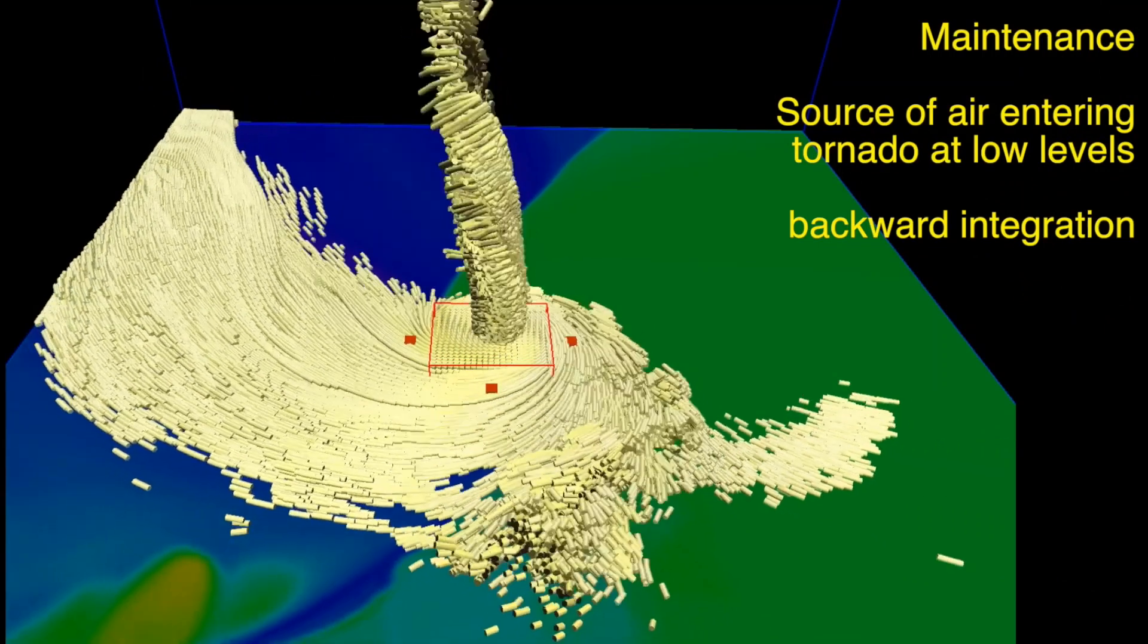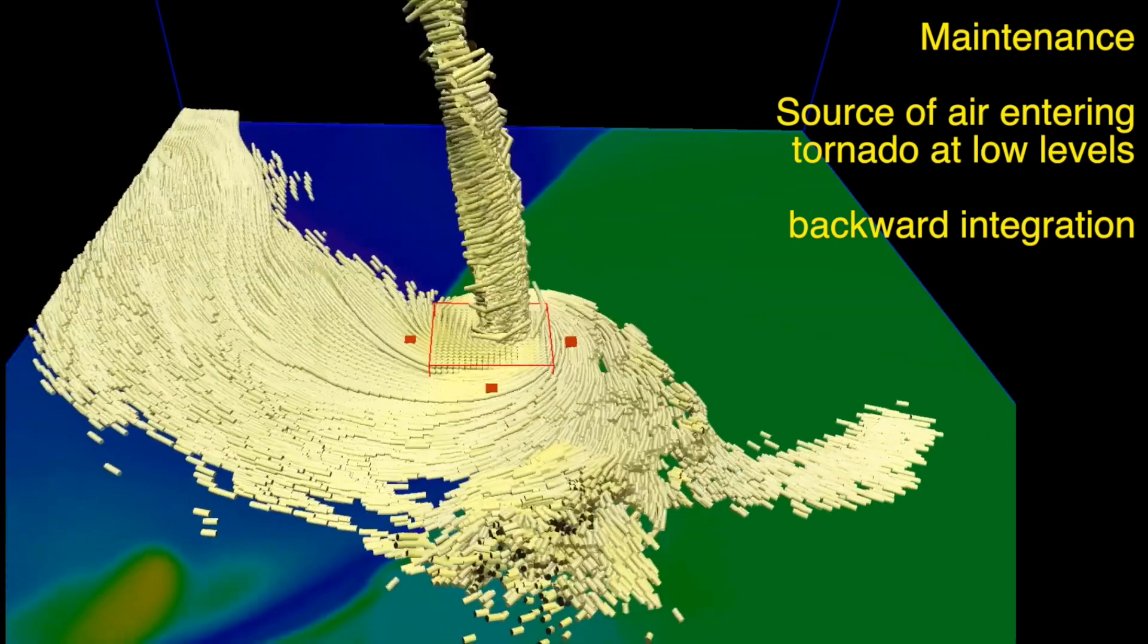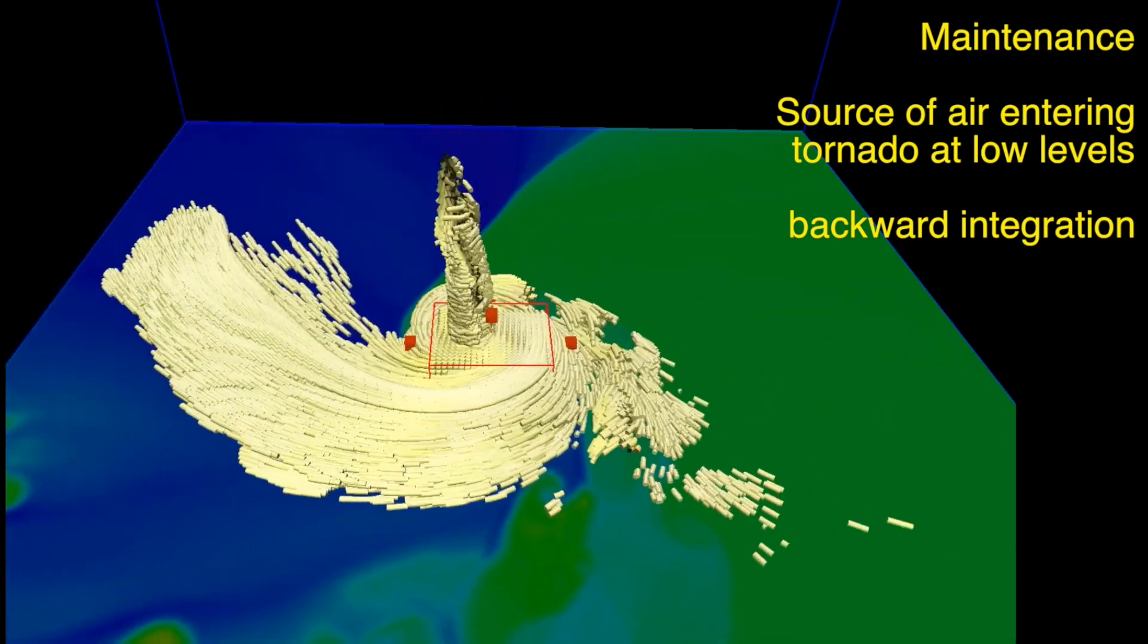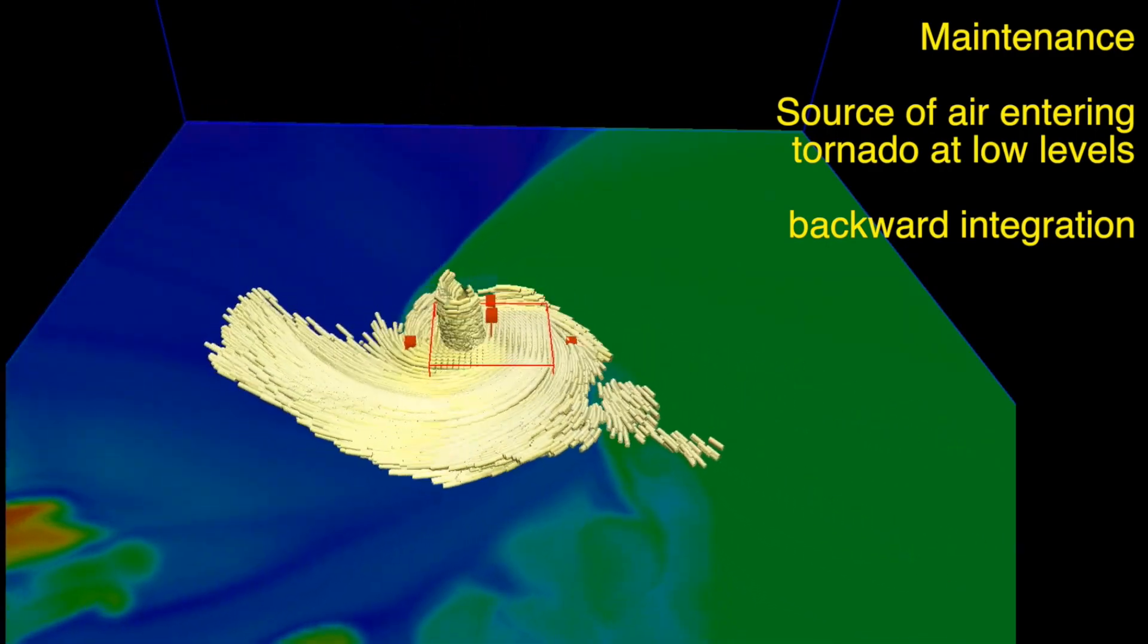I did a few backward integrated trajectories to see where the air comes from that enters the lower part of the tornado. We see that some of it enters from the cold side here, and some of it enters from the warm side. So that's another useful result as well.